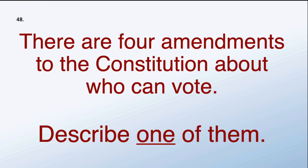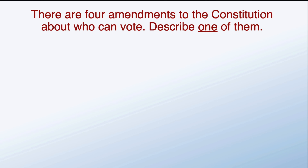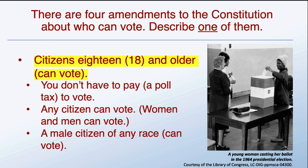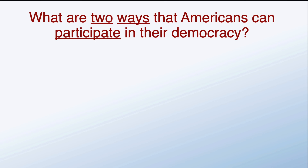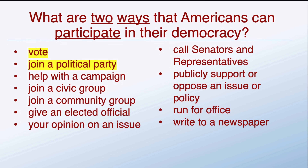There are four amendments to the Constitution about who can vote. Describe one of them. Citizens 18 and older can vote. What are two ways that Americans can participate in their democracy? There's a list. I chose vote and join a political party.